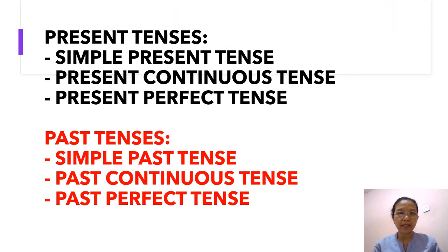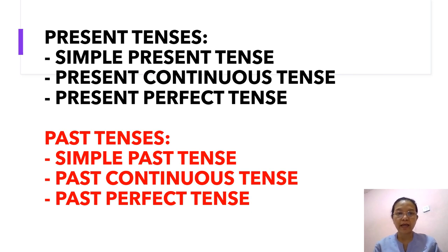Present tenses consist of simple present tense, present continuous tense, and present perfect tense. And past tenses consist of simple past tense, past continuous tense, and past perfect tense.